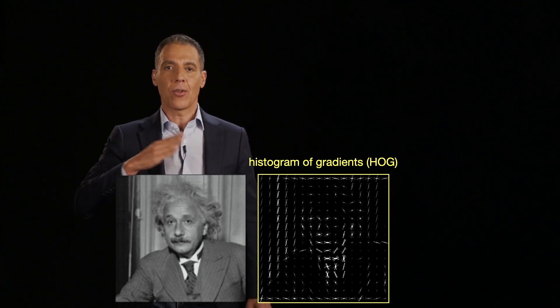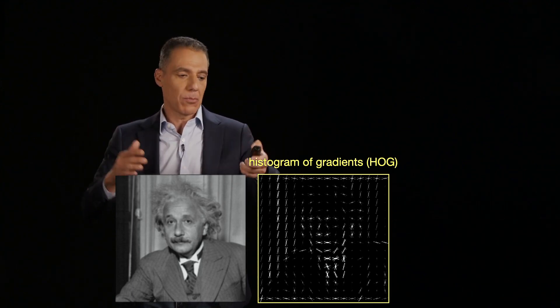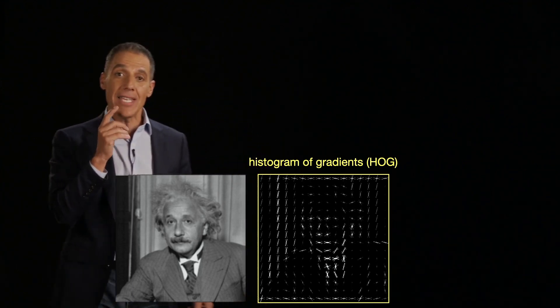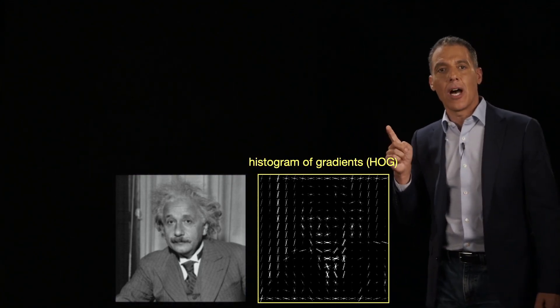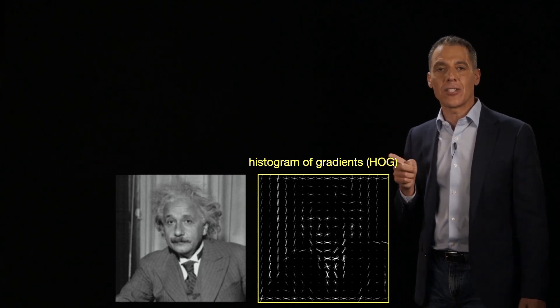So on the tie, it's horizontal. On the curtain in the back, it's mostly vertical. And these turn out to be very, very good representations for things like object recognition, face recognition, face detection as well.